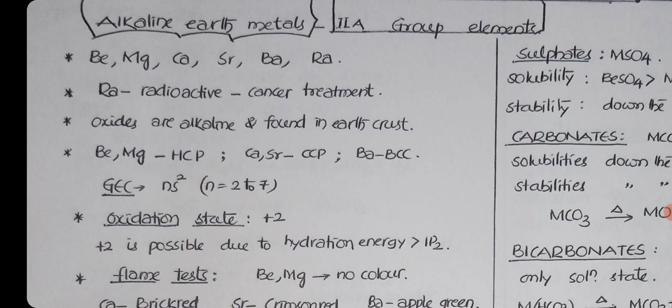Alkaline earth metals: second A group elements are called alkaline earth metals, except beryllium. Magnesium, calcium, strontium, barium, and radium. These oxides are available in the earth crust and are basic in nature. Radium is radioactive, used in cancer treatments. Beryllium, magnesium have HCP structure; calcium, strontium have CCP structure; barium has BCC structure. General electronic configuration is NS2, where N is equal to 2 to 7. Oxidation state plus 2.